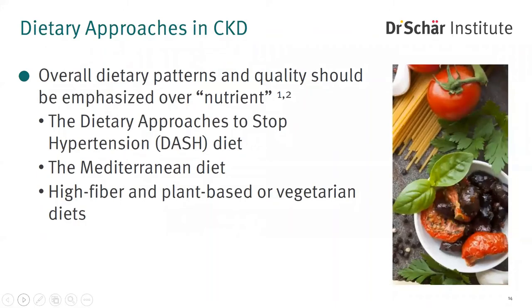Certain healthy eating patterns may help prevent cardiovascular events and reduce mortality in these patients. The DASH diet and the Mediterranean diet have been proposed as helpful approaches in CKD. These two diets are really getting at healthy eating patterns — they are plant-forward, high in fiber, and low in animal-based proteins, processed foods, saturated fat, sugar, and sodium. High-fiber and plant-based vegetarian diets are of interest as a means of reducing gut absorption of uremic toxins in CKD, and vegetarian diets have been associated with reduced prevalence of CKD. The basic healthy principles include maintaining a healthy weight, lifestyle, and diet full of plants, not a lot of animal-based foods.